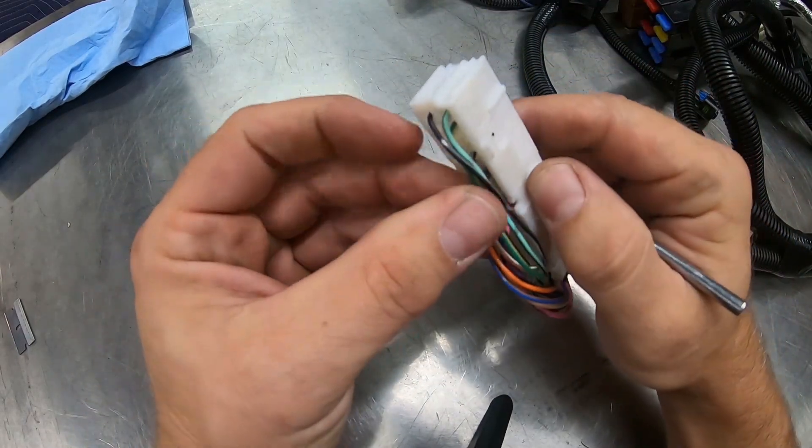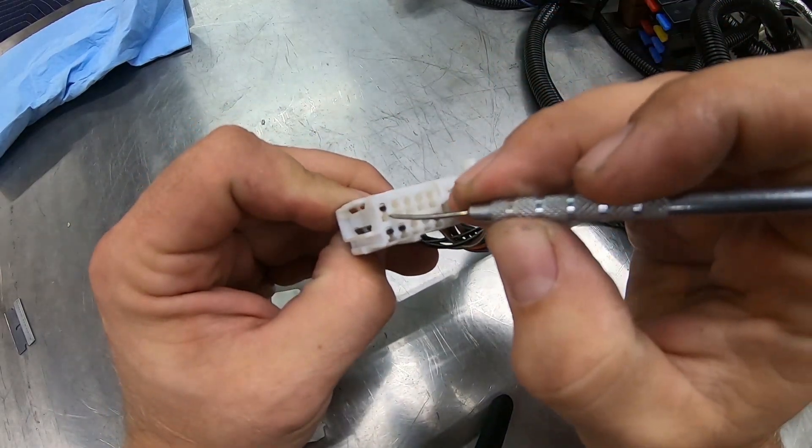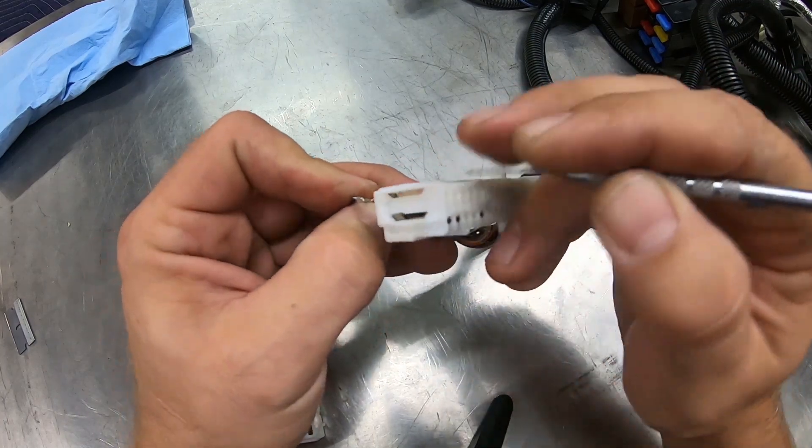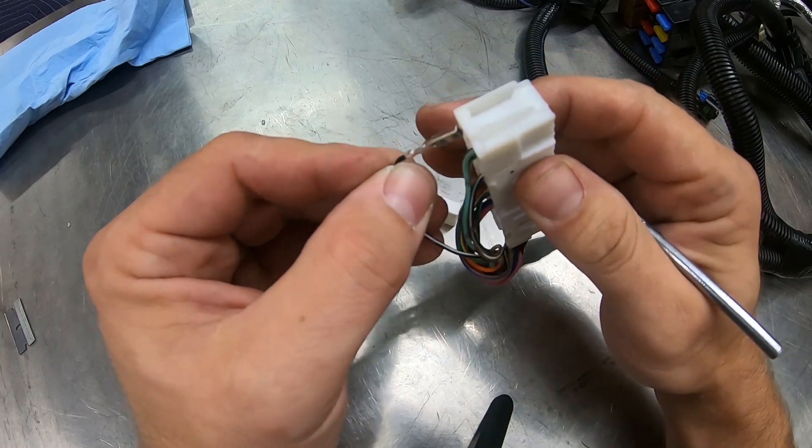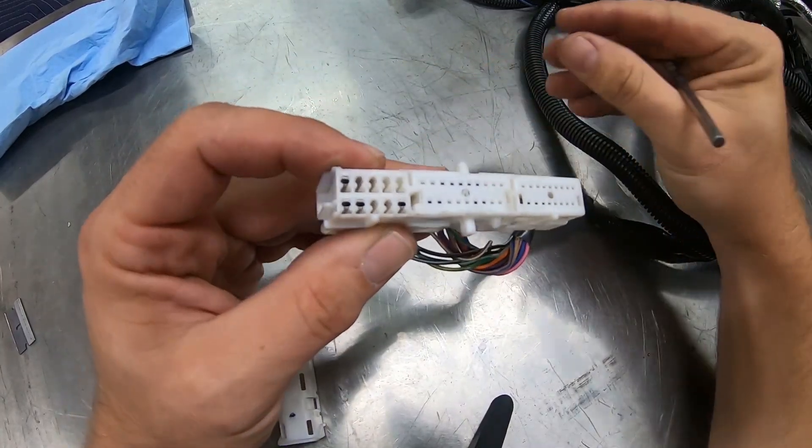Once that retainer comes out, if you want to de-pin a wire, you come in on the front side just above the terminal with your pick tool and there's a little tab that you release and then the wire comes out. Then you put the new wire in, you'll hear it click back into place.